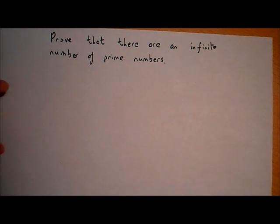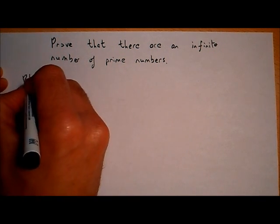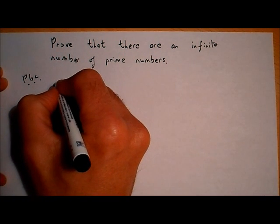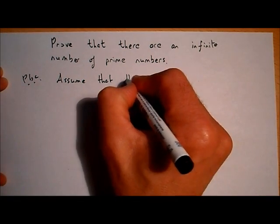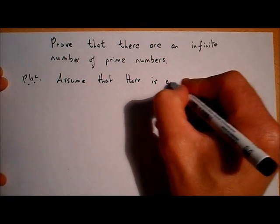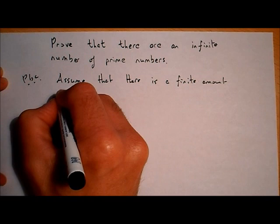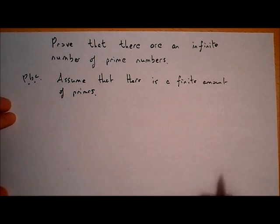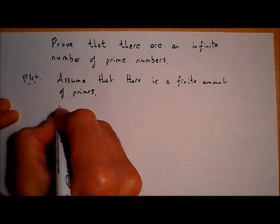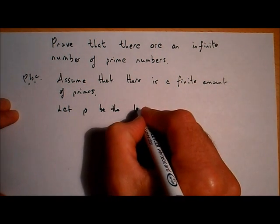Let's prove that there's an infinite amount of prime numbers. We're going to use a proof by contradiction. We assume the opposite: that there is a finite amount of primes. If there's a finite amount of primes, then there must be a last prime. So let P be the last prime.